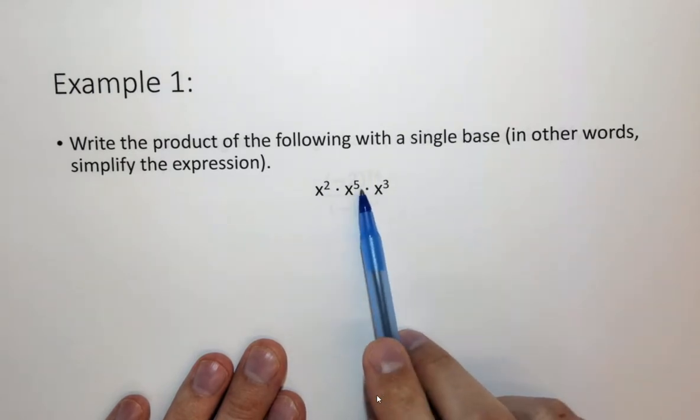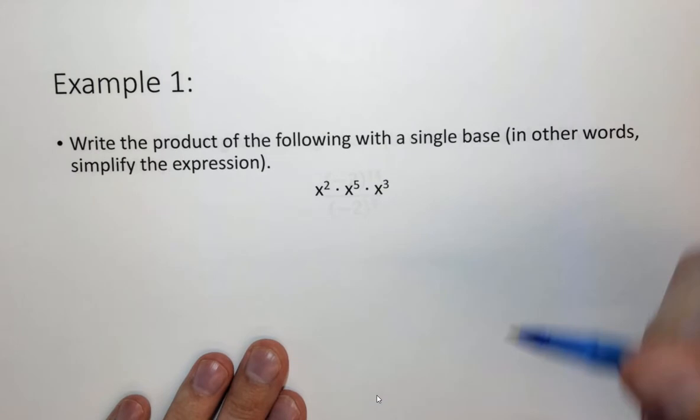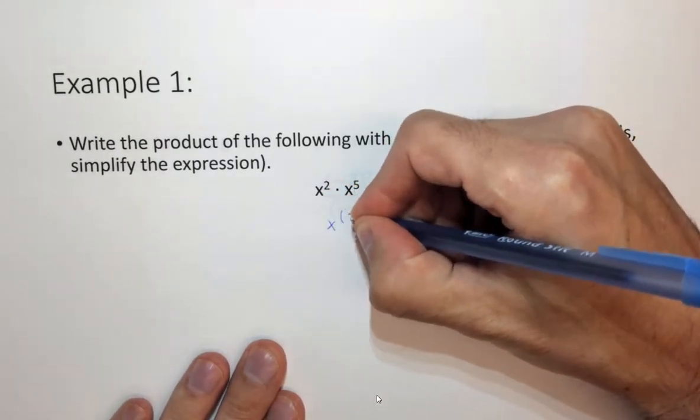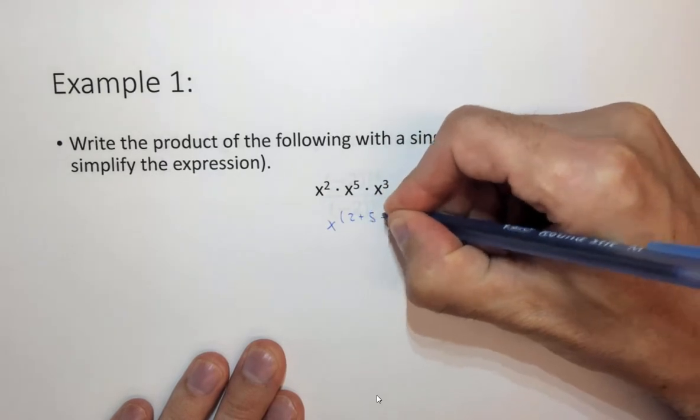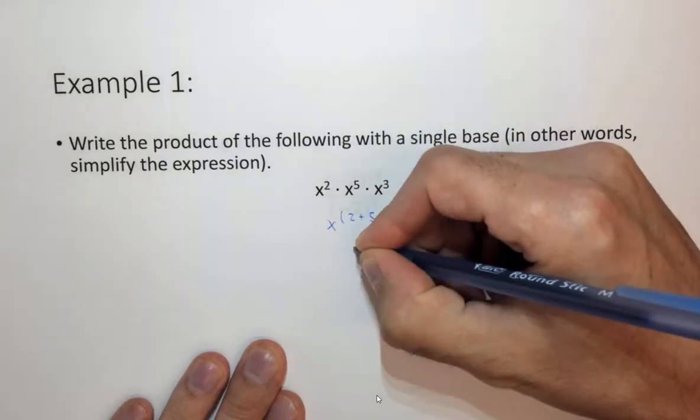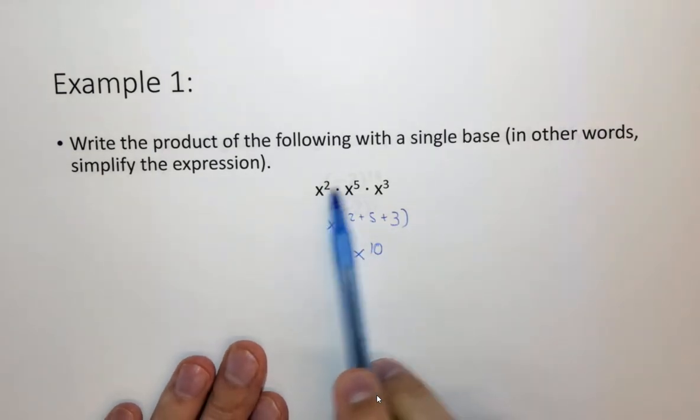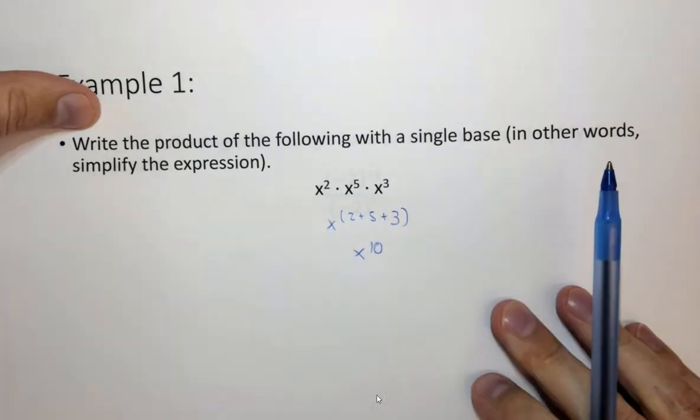Well when we're multiplying numbers to exponents we add the exponents. So this is going to be x to the 2 plus 5 plus 3, which in this case is x to the tenth. So when you're multiplying numbers raised to powers you add the exponents.